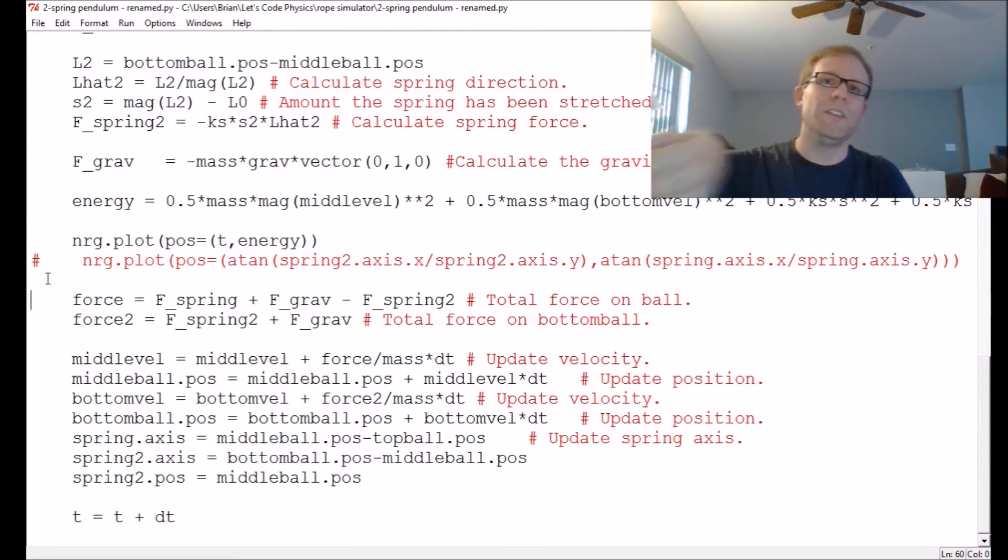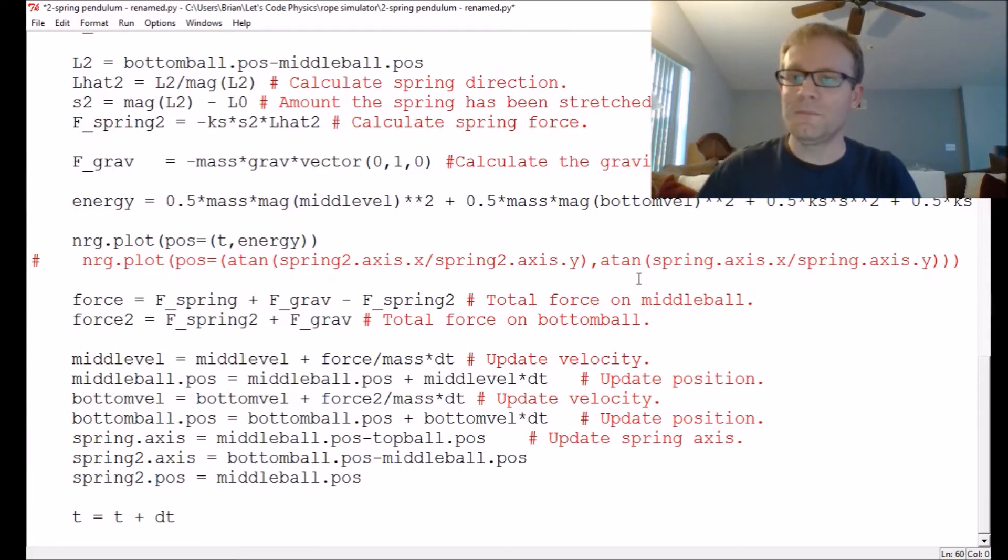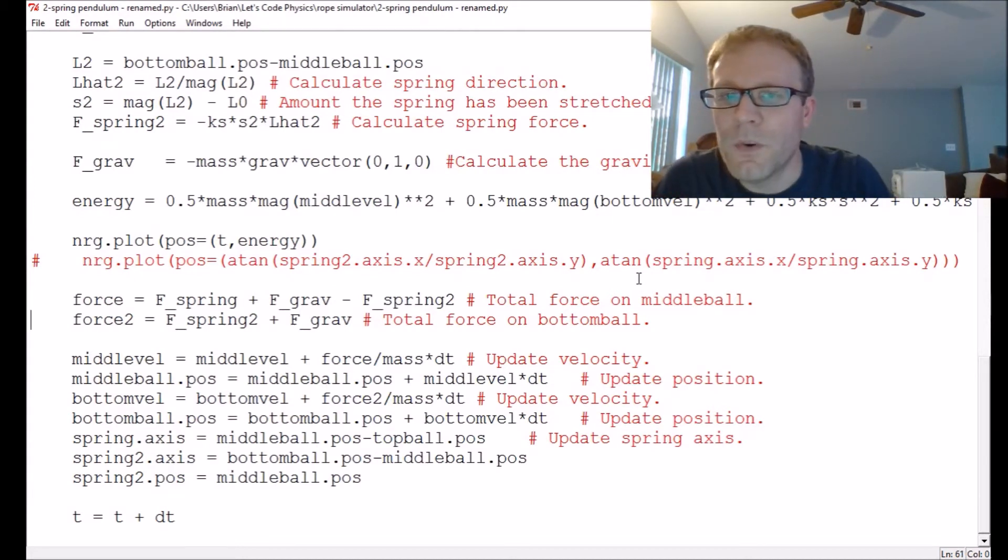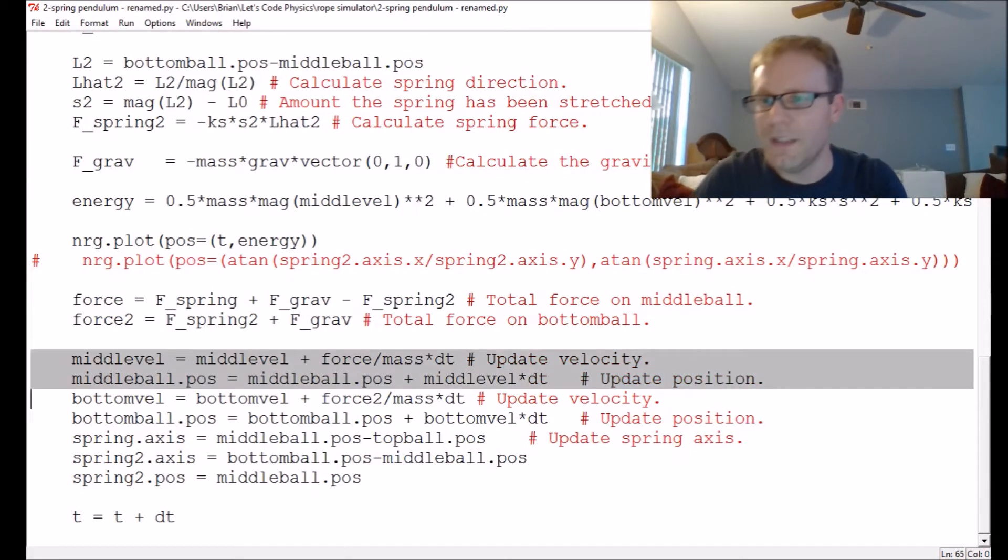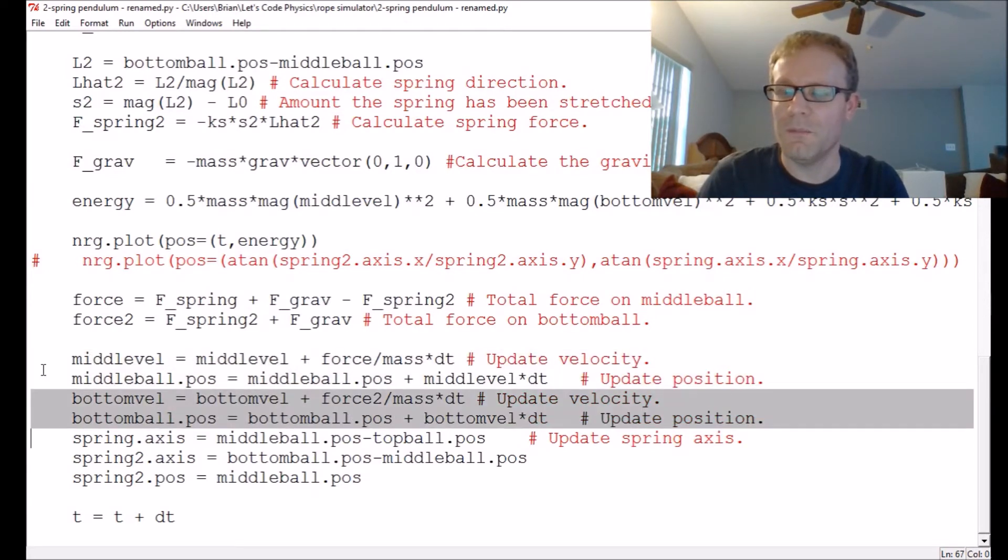In order to move the middle spring and the bottom spring, we've got to calculate the forces on them. What I'm going to do for right now is leave that top spring locked in place so that the rope, hopefully, if this thing does successfully model a rope, it'll swing back and forth with that top atom in place and those middle and bottom atoms swinging back and forth like a rope. So we have to calculate the force on the middle ball. And then we've got the force on the bottom ball. If it doesn't have a number on it, it applies to the middle ball. If it does have a number on it, it applies to the bottom ball. Here we're updating their velocities. This is middle velocity, not mid-level. So we're updating the middle ball's velocity and position. Then we update the bottom ball's velocity and position. It doesn't really matter which one we do first, because we've already calculated the forces.